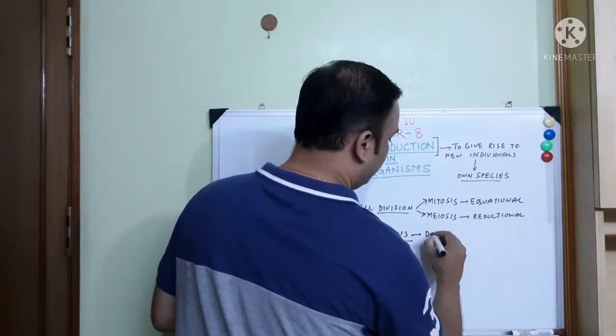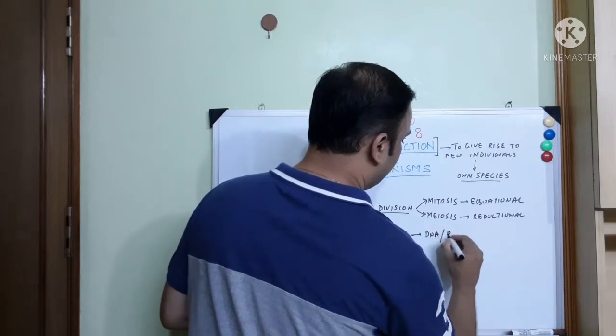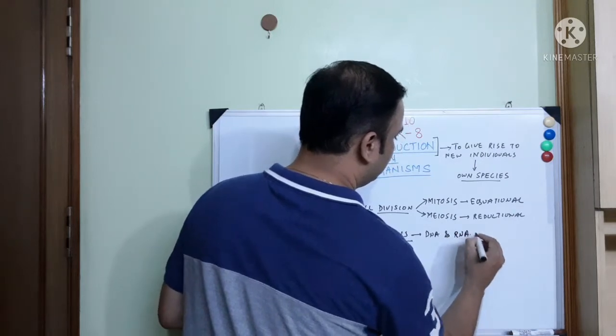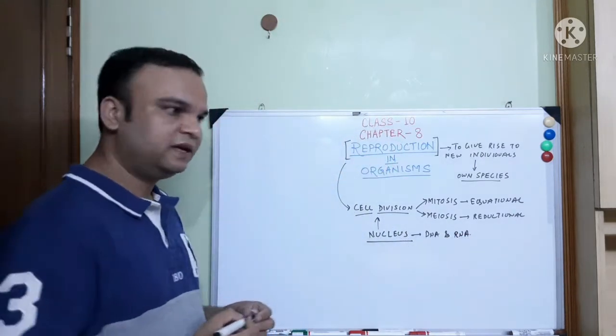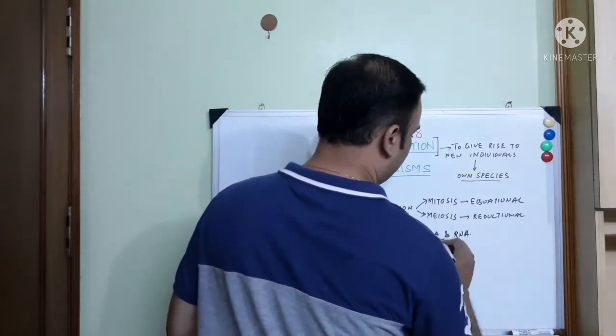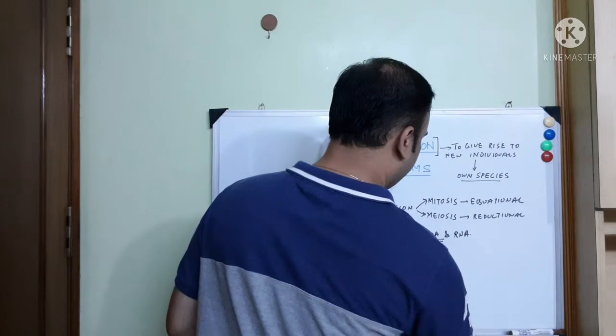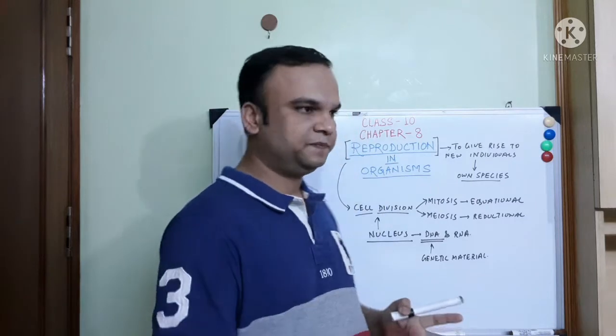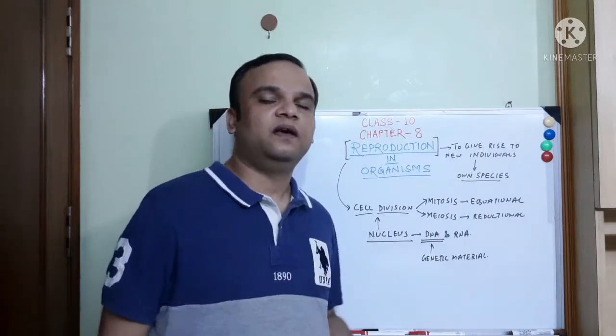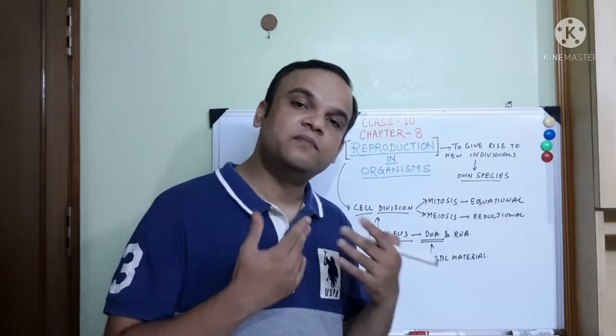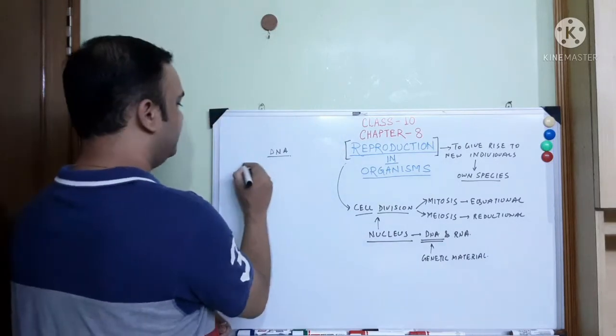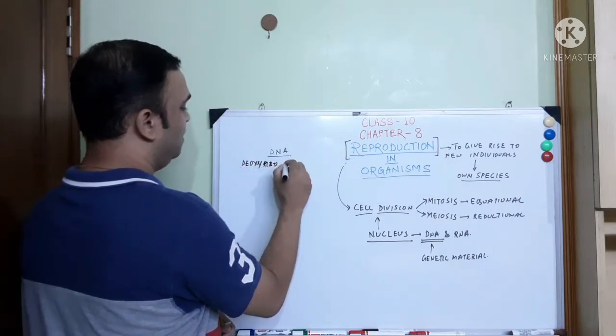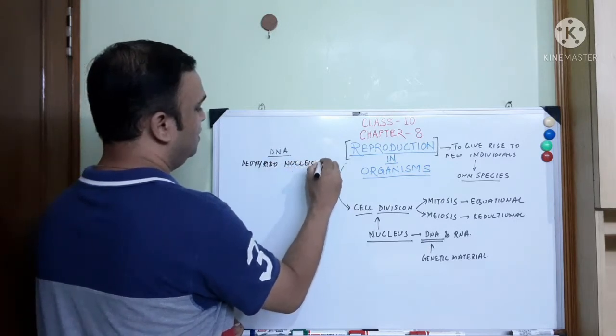Nucleus contains the DNA and RNA. DNA and RNA, in eukaryotic cells, DNA is the genetic material. DNA is Deoxyribonucleic acid.